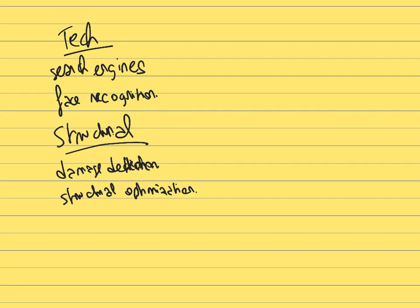Another example of machine learning application is in the context of geotechnical engineering. In geotech, one application among many is to analyze satellite data to obtain properties of soils — based on images provided by satellite or aerial views, or sensors placed in the ground. Machine learning can use those data to find relevant patterns that give information about soil properties and the risk of liquefaction.